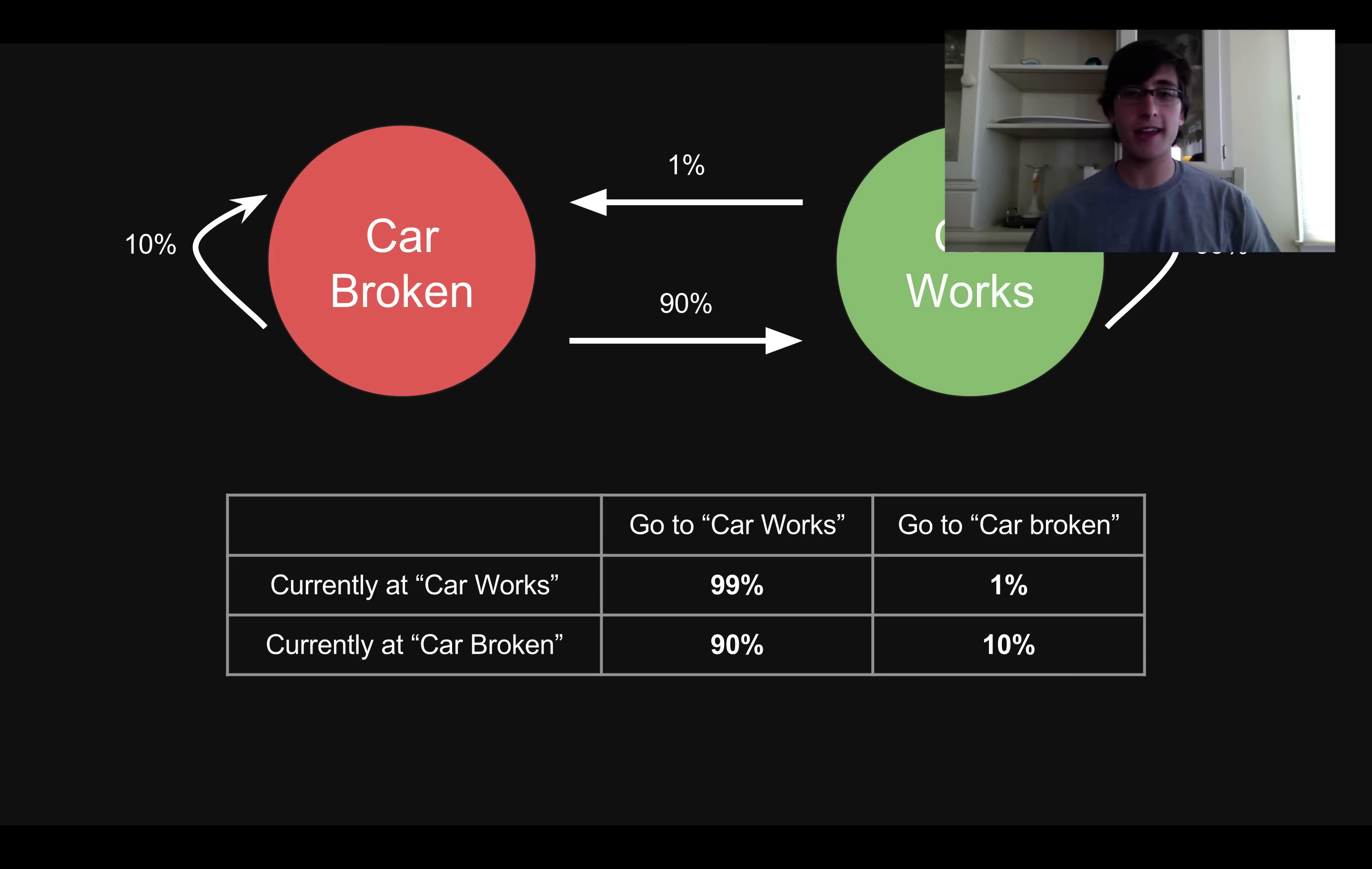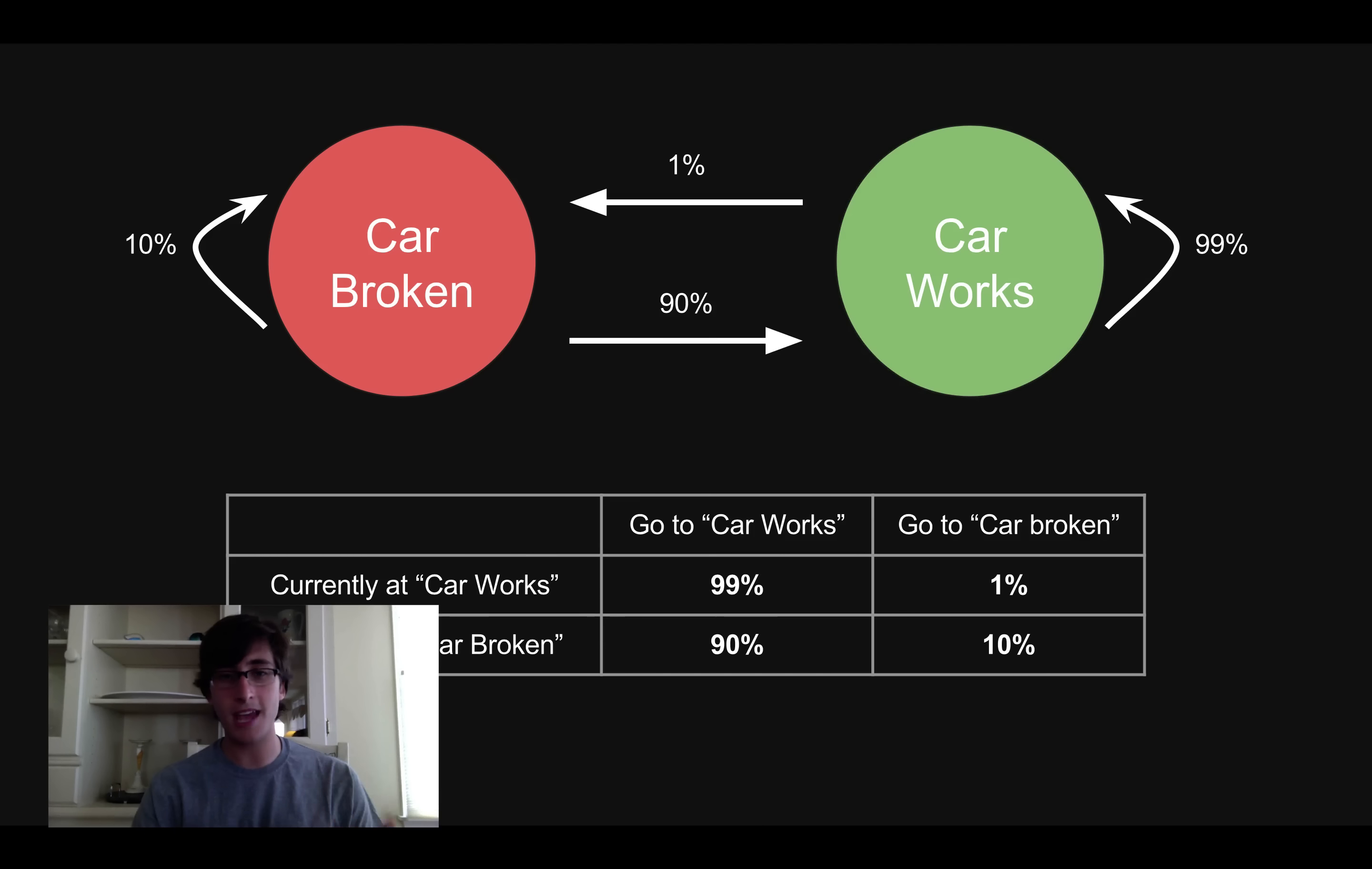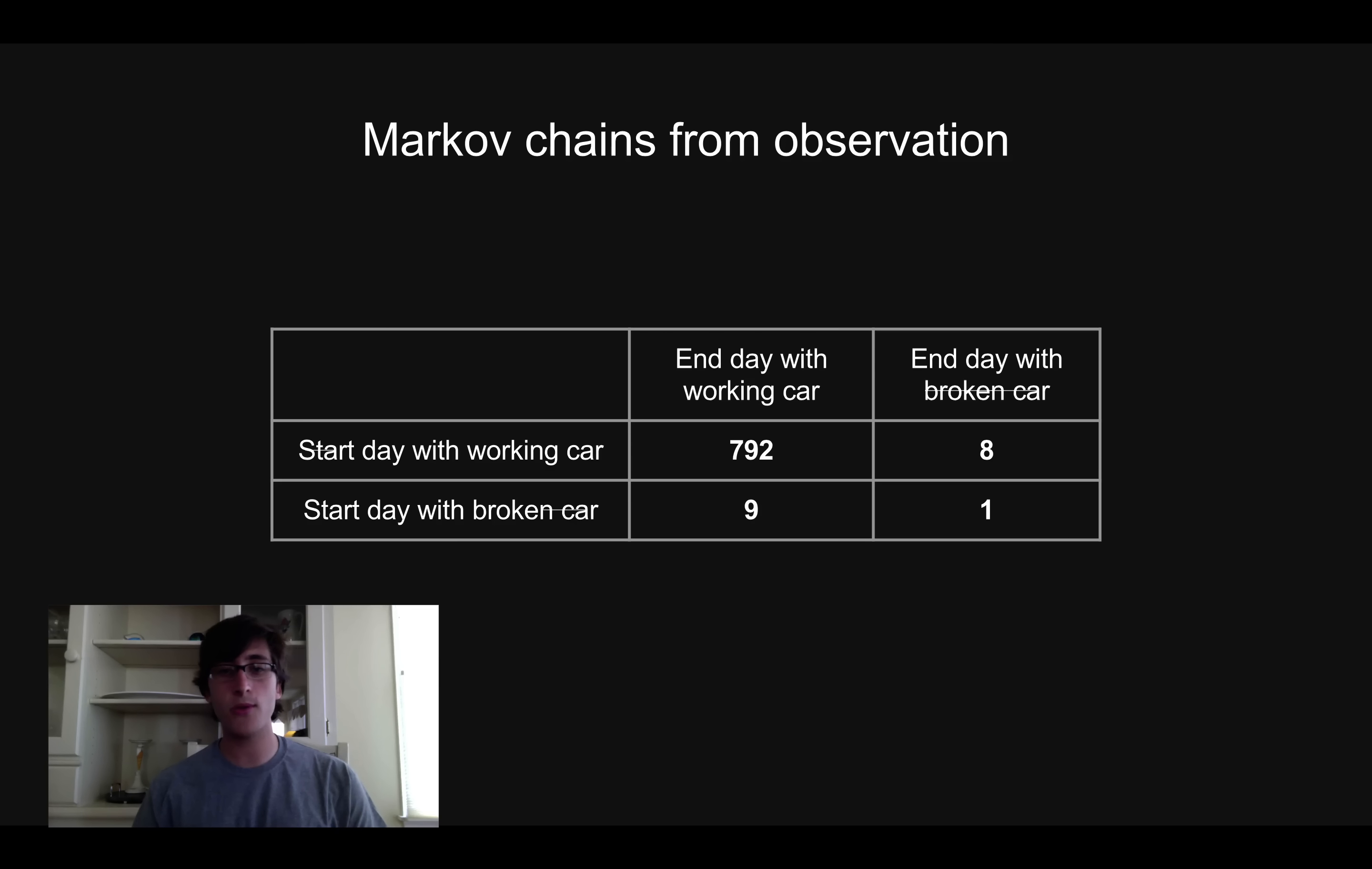So you might be wondering, how could I actually gather this data? How would I find out that 99% of the time my car works, it'll keep working, and 90% of the time my car is broken, I'll get it fixed. How do I figure out these probabilities in a real-life situation? And one way to do that is to just gather a lot of data. So suppose I spent a little over two years just every day, in the morning, know whether my car works, and at night I know whether my car works. And so I could fill in this table, and so the idea is, let's say I started the day and my car was broken. I ended the day and my car was working.